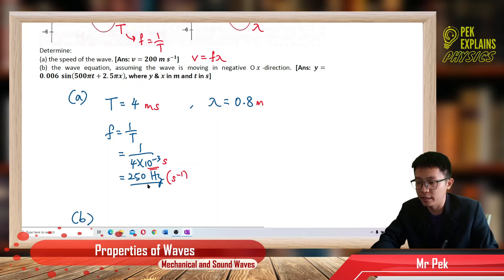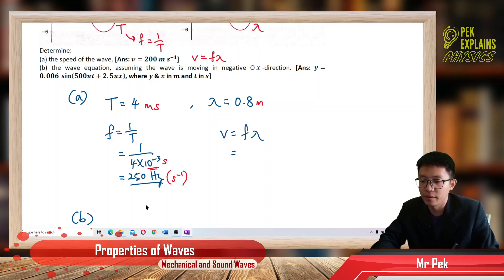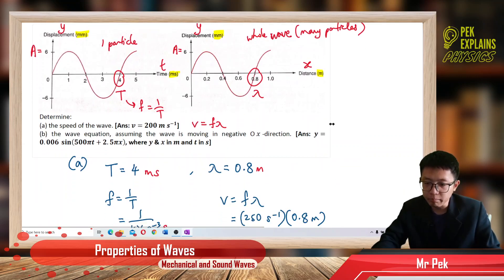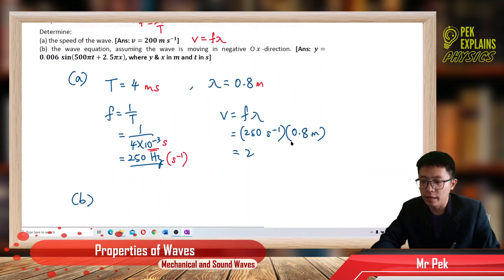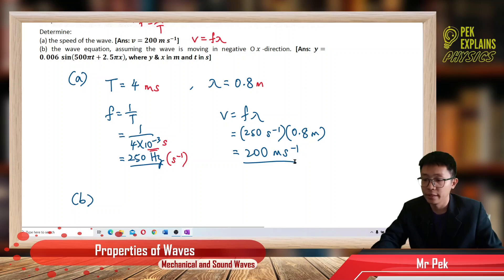Frequency is per second, and per second is hertz — same meaning. I have the lambda in meter, so now I can find the wave speed: v = fλ, which is 250 per second multiplied by the lambda 0.8 meter. The answer is 200 meter per second. Always be careful with the unit — don't use millisecond; you must change to SI unit to get the correct answer. That's the speed of the wave.